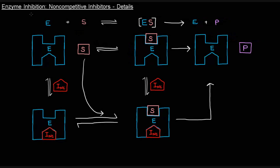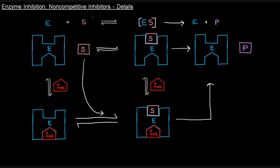Okay, so enzyme inhibition — non-competitive inhibitors. We've talked about them, but I want to be more complete in this video. So: free enzyme binds substrate, gives you the enzyme-substrate complex, which can go towards enzyme and product.